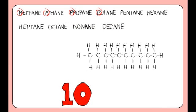You must remember the names of the first ten in the series. Following butane, you could relate the names to that of polygons. For example, heptane has seven carbons, and a heptagon has seven sides.